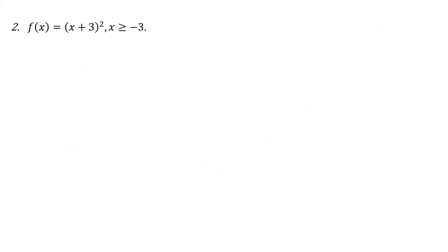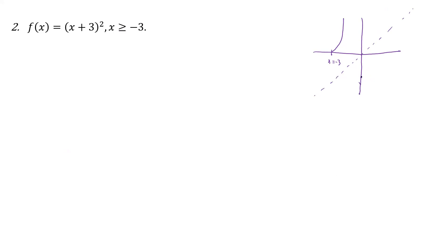What about this one? We have another quadratic, so we have to think about what that means. With the plus 3, it's going to be shifted left, coming up here like this. So this is going to be x equals negative 3. We have to have x greater than or equal to negative 3. That's going to be our y equals x line. The inverse is going to come over here somewhere, like that.